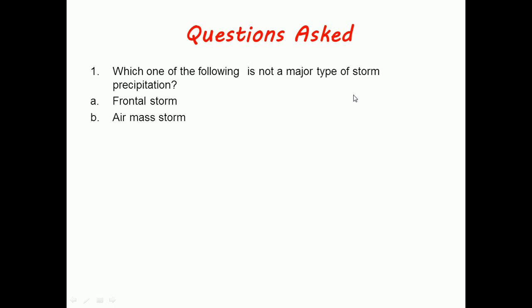Options are frontal storm, air mass storm, orographic storm, or continental storm. Since we have read about these three storms but not continental storm, it is not counted as a major type of storm precipitation. The answer is continental storm.